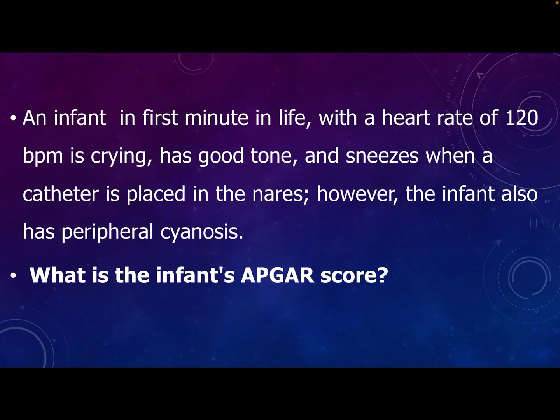Let us discuss a case scenario. We have an infant at one minute of life with a heart rate of 120 beats per minute. He is crying, has good muscle tone, and is sneezing when we insert the catheter in his nose. However, the infant has peripheral cyanosis. What is the APGAR score of this baby?